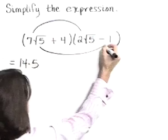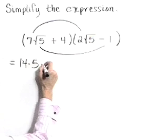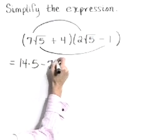Our outer product: 7 root 5 times a negative 1 is a negative 7 root 5.